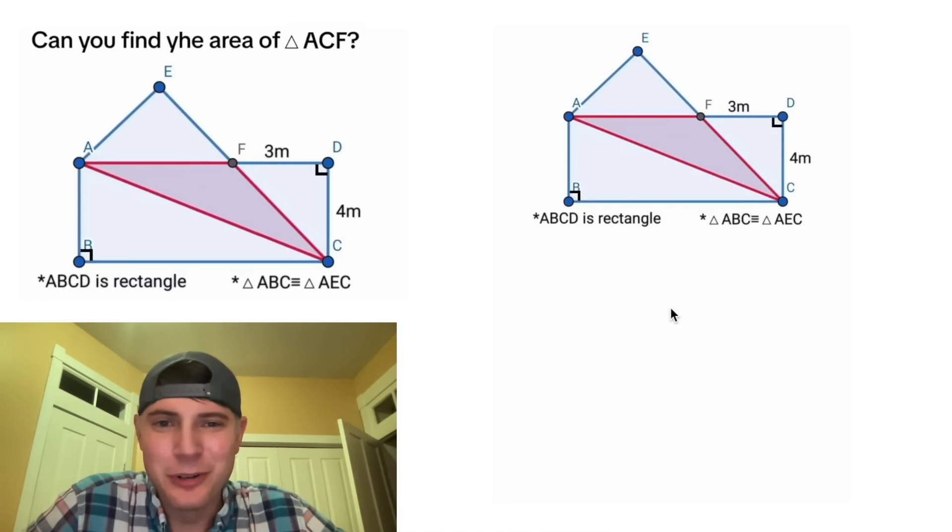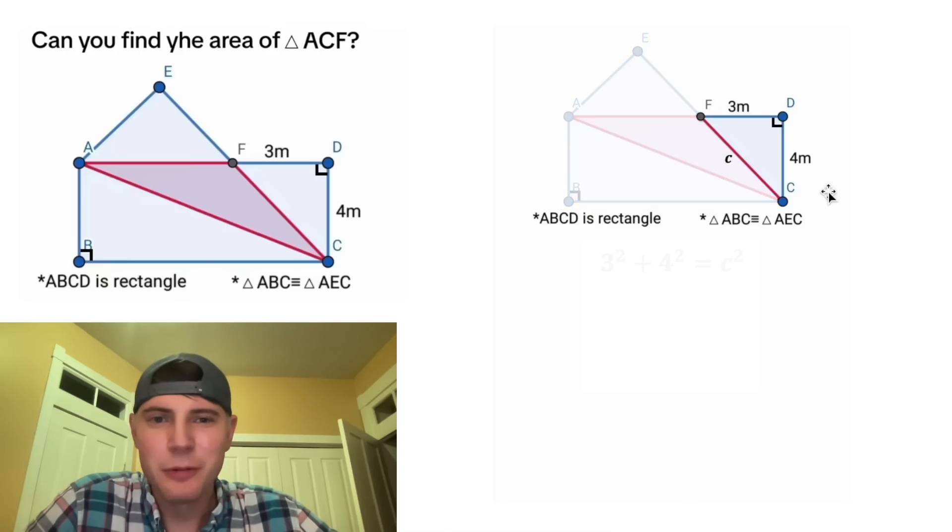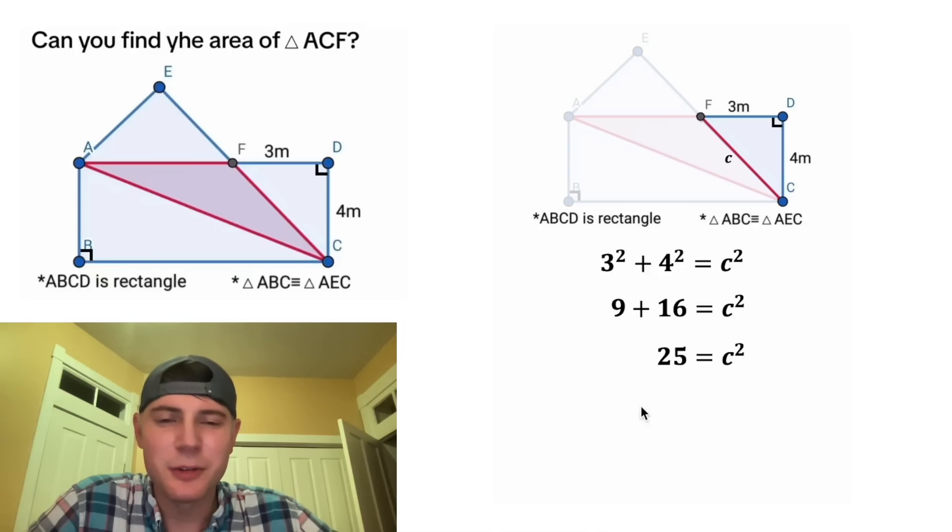So how do we approach this? I'm just going to go freestyle and try to find everything I can. First thing I'm noticing is this right triangle, so we can make this side C and do Pythagorean theorem. We'll have 3² + 4² = C². 3 squared is 9, 4 squared is 16, and then we can bring down the C squared.